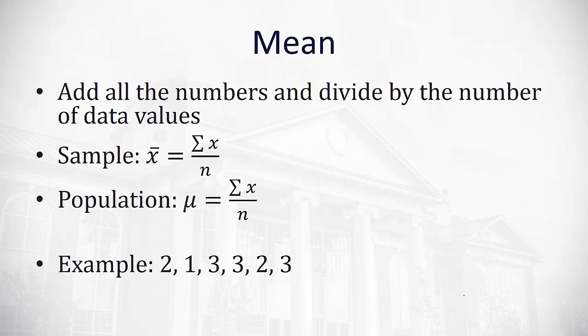The mean takes a little more calculating. The mean considers all the numbers. We add all the numbers together and divide by the number of data values. We have two different symbols for the mean depending if we're talking about a sample, a small group of numbers to estimate a bigger group, or the population. The sample will use x bar. The population will use the Greek letter mu. It looks like a letter u with a tail on the left side. But both are calculated the same way.